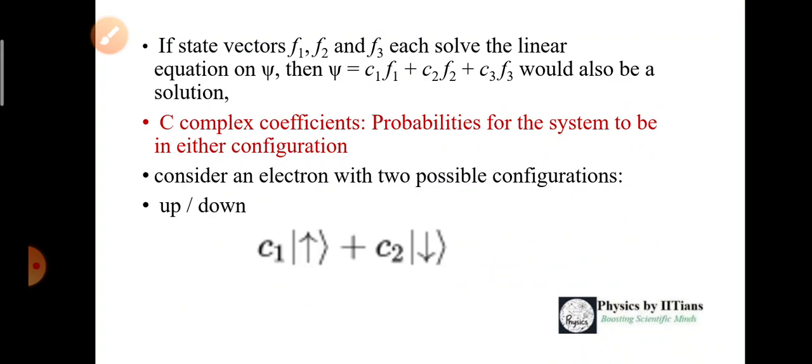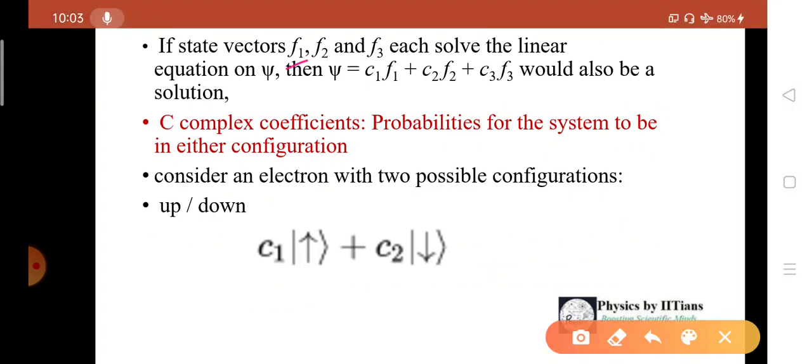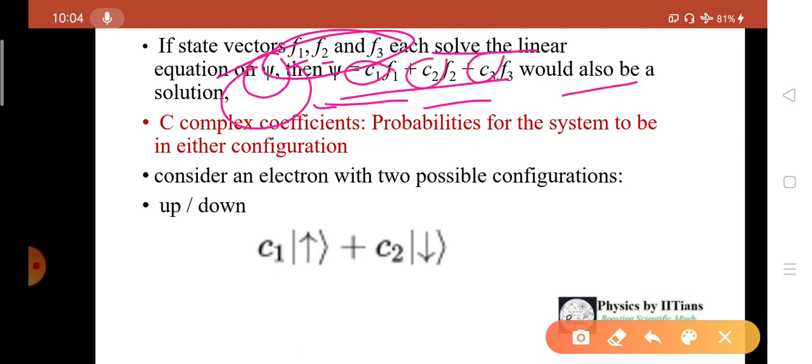Suppose you are taking three state vectors: F1, F2, and F3. Each solves the Schrödinger equation, the linear equation on psi. Then psi can be written as psi equals C1 F1 plus C2 F2 plus C3 F3, which is also a valid solution. Because each of the F1, F2, F3 state vectors satisfy Schrödinger equation, the linear combination of them will also satisfy Schrödinger equation. What are C1, C2, C3? These are complex coefficients. What do they represent? They represent the probabilities for the system to be in either configuration.